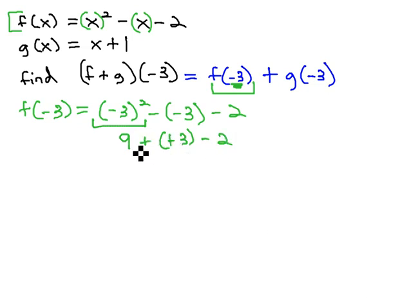minus (-3) minus 2. Adding the opposite, 9 + 3 = 12, and 12 - 2 = 10. So f(-3) = 10.